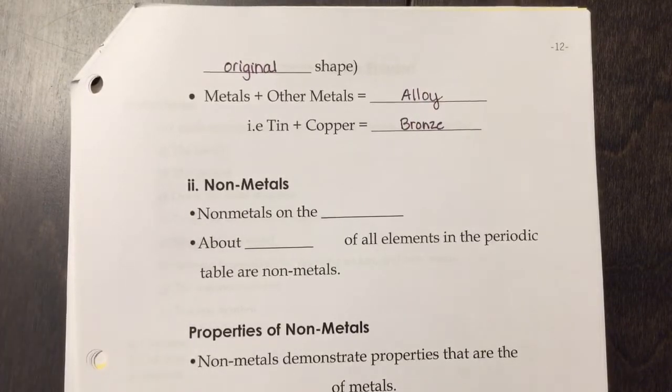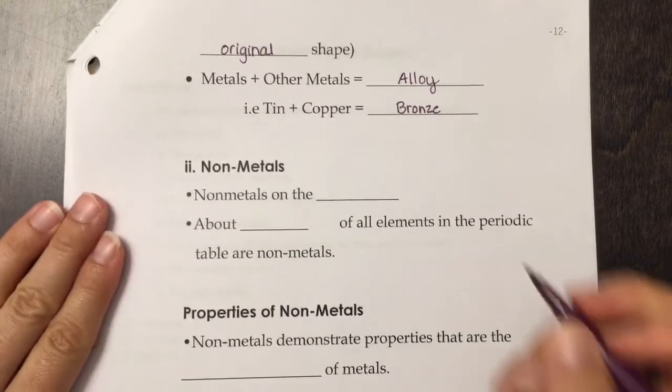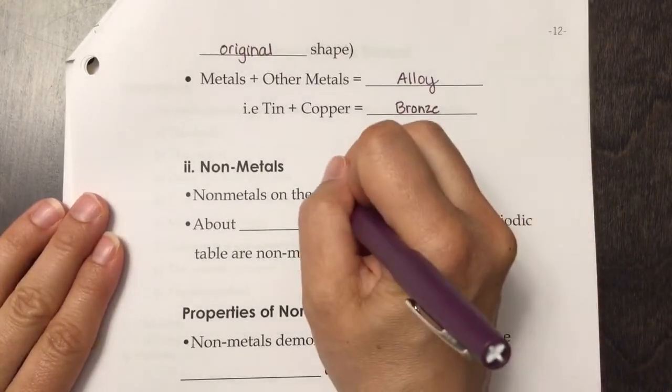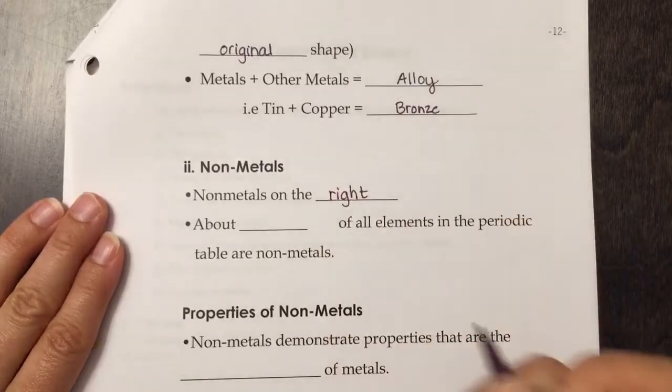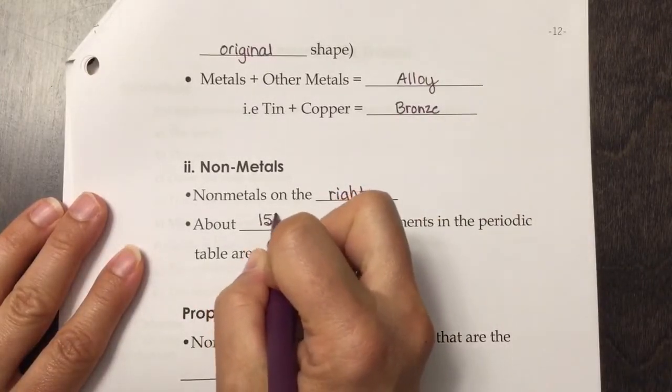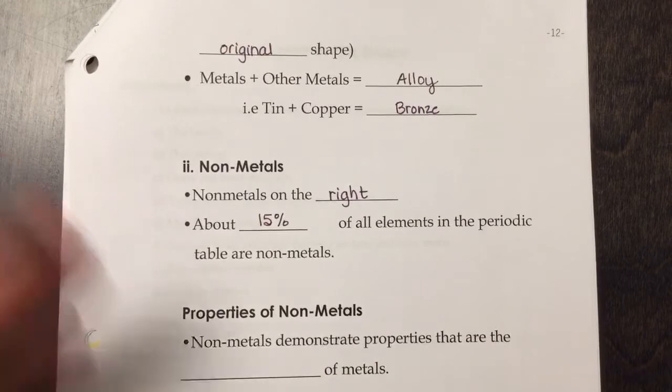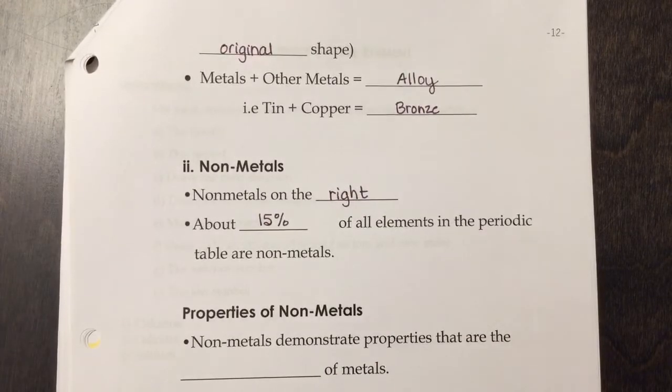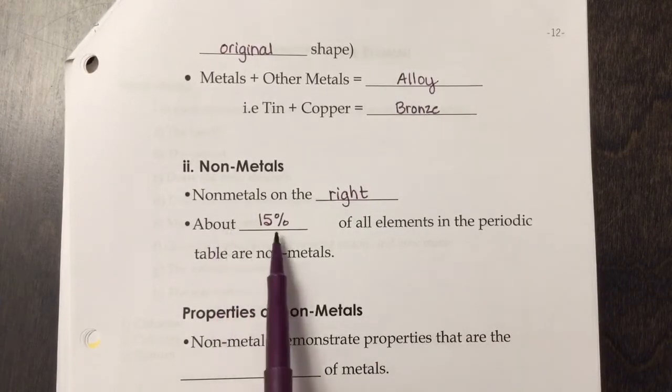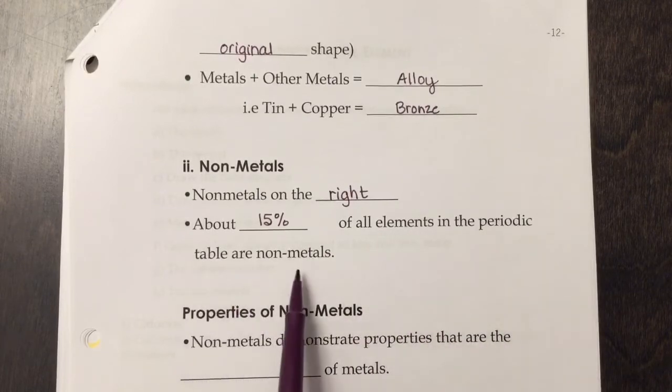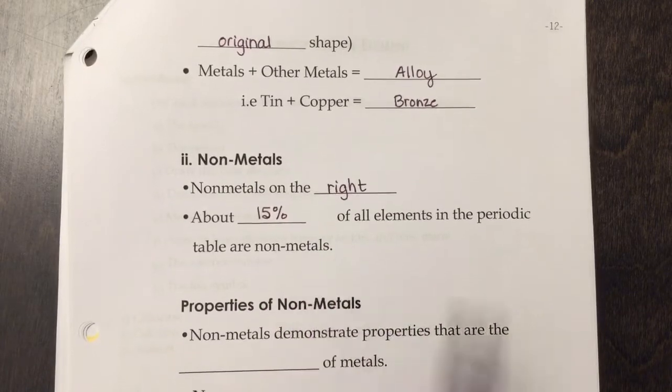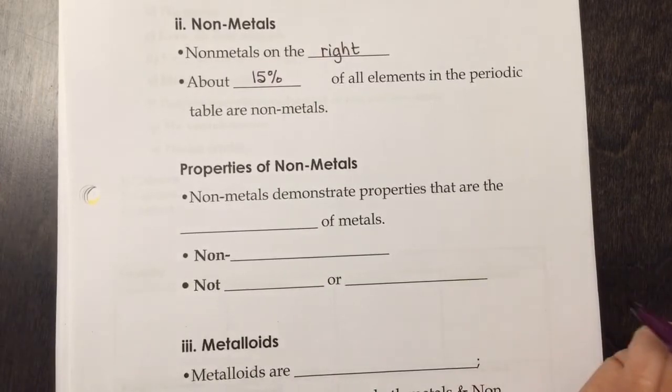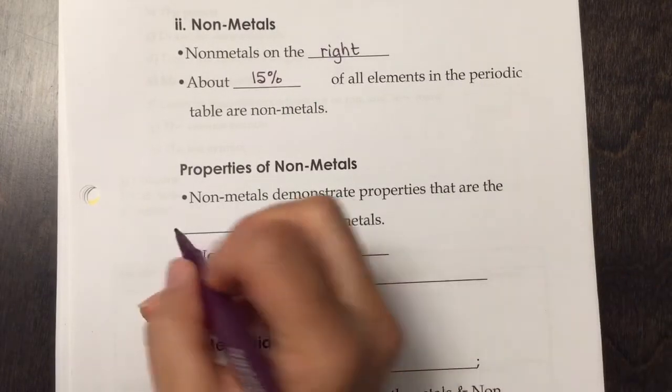After metals we have non-metals. Non-metals are on the right side of the periodic table. They make up about 15% of all the elements on the periodic table are non-metals.